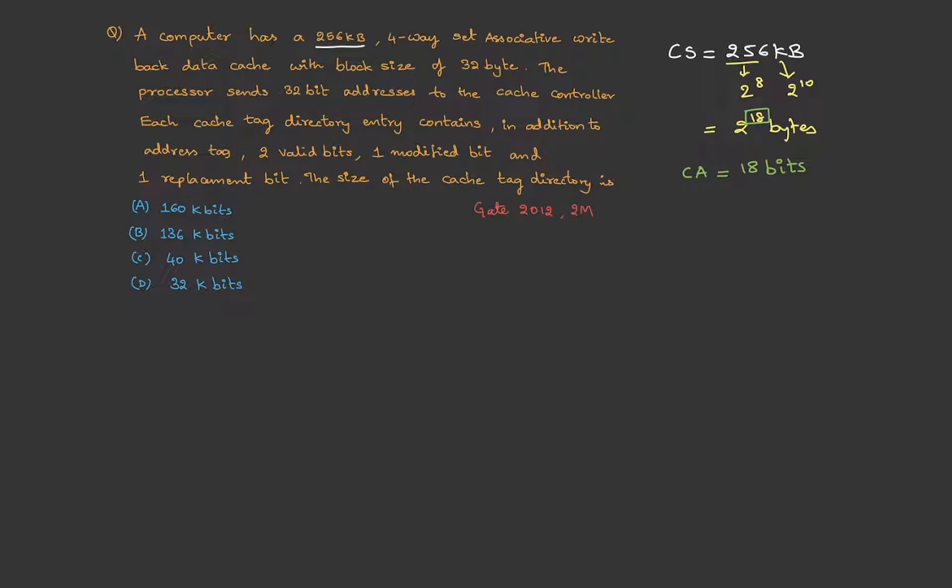So, we need 18 bits for cache addressing. Then they said it's a four-way set-associative cache 4 way. This implies that K is 4. Next, they have given the block size as 32 byte. So, block size 32 byte. This is 2 power 5 bytes. So, we need 5 bits for block offset.